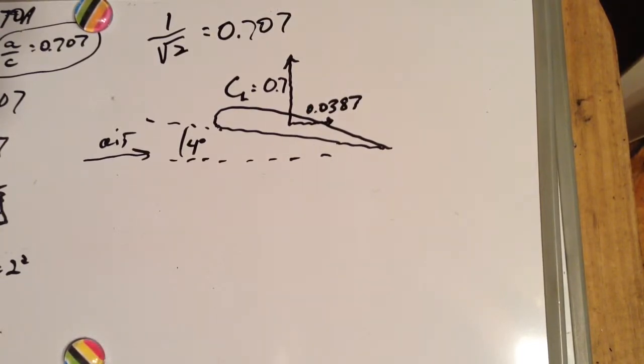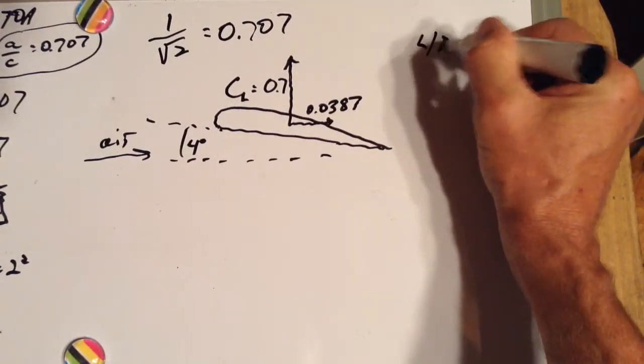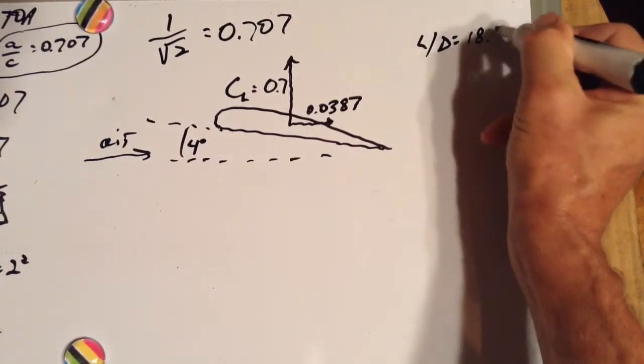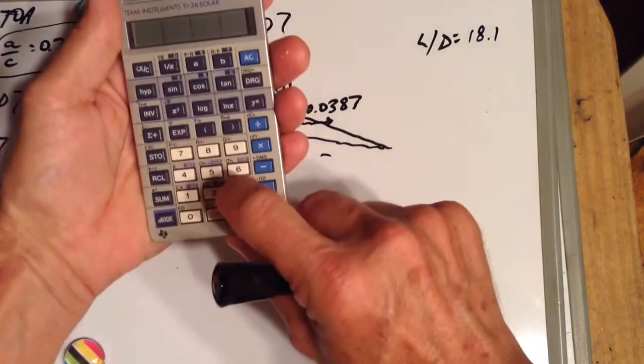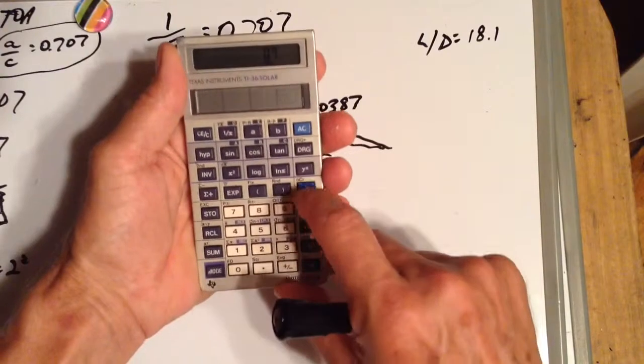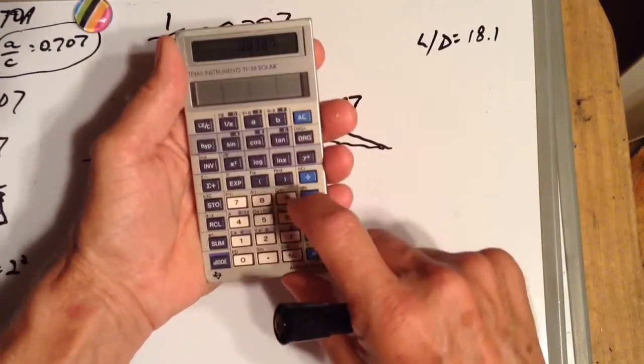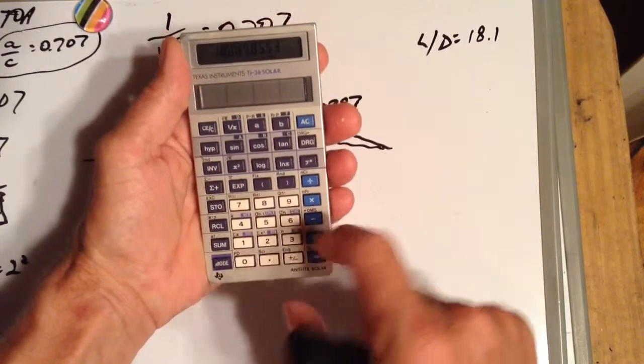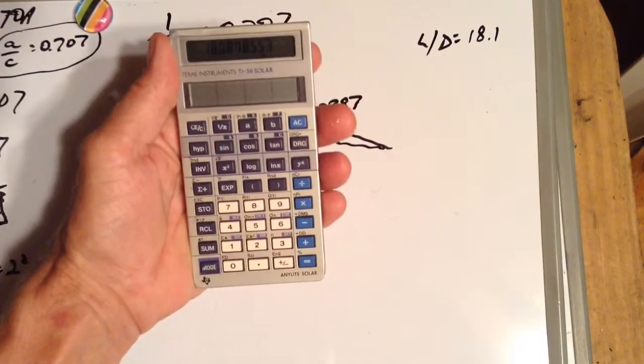The wing's lift drag ratio is 18.1. We can calculate that by dividing our 0.7 by 0.0387. 0.7 divided by 0.0387 equals 18.0878 whatever, 18.1.